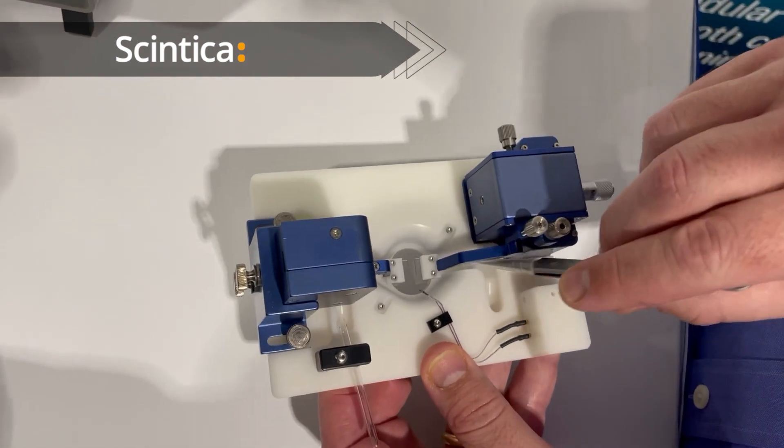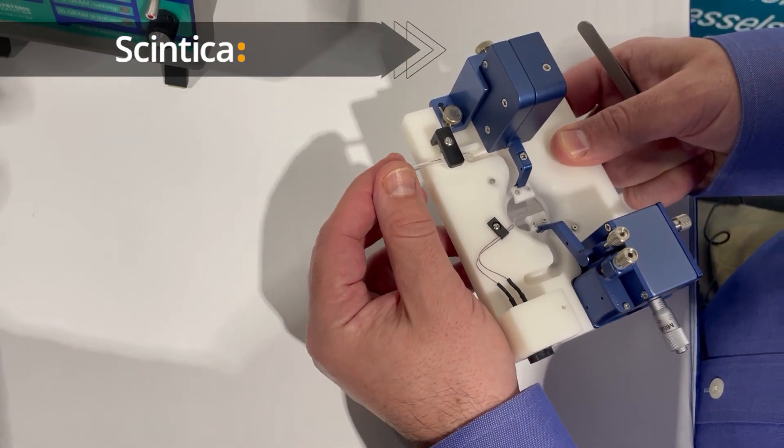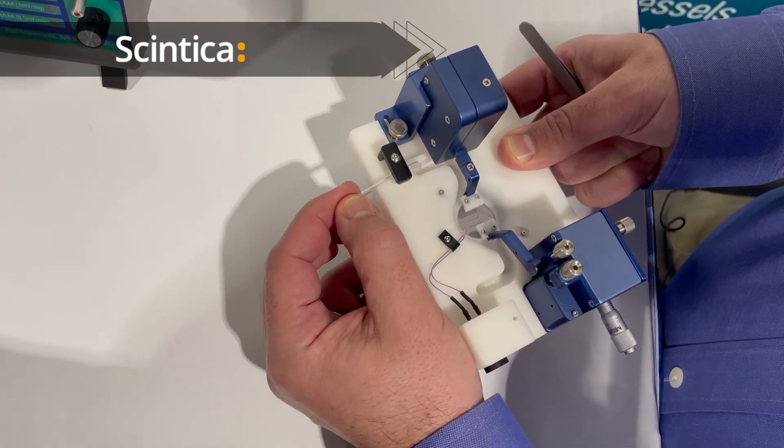It has bath superfusion, inflow, and outflow. The outflow pipe can be raised and lowered to adjust the volume of the saline in the bath.